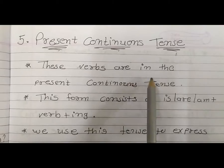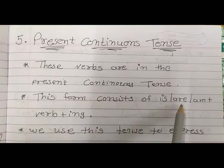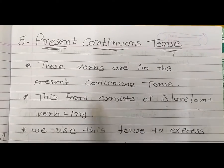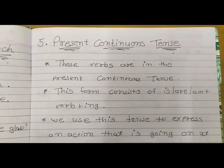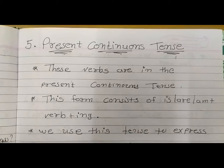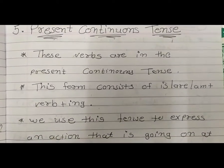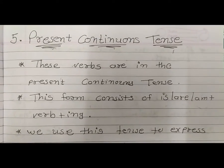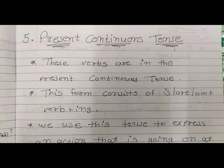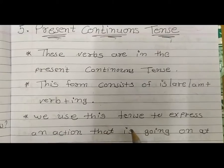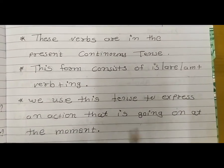These verbs are in the Present Continuous Tense. This form consists of is, are, or am, plus verb plus ing. We use this tense to express an action that is going on at the moment.